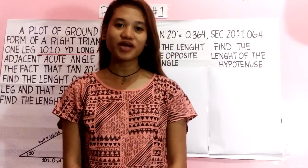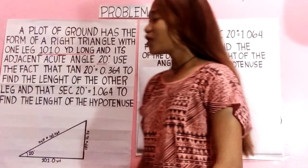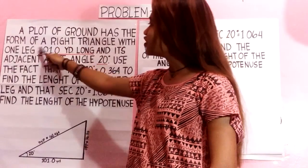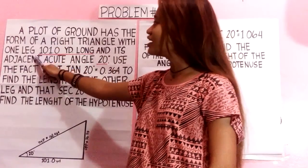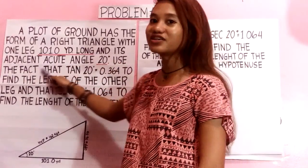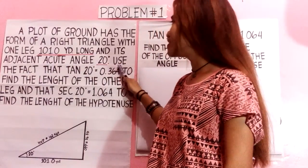I will solve problem number one. A plot of ground has the form of a right triangle with one leg 101.0 yards long and its adjacent acute angle is 20 degrees.